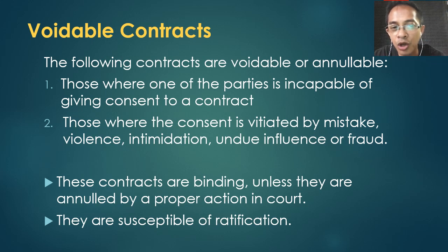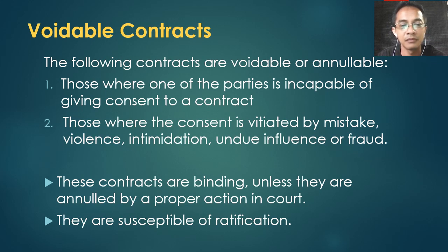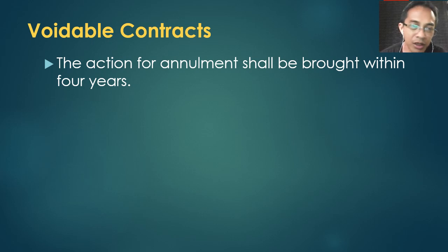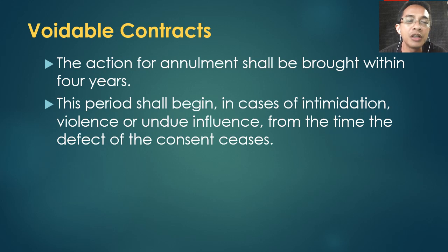Voidable contracts are susceptible to ratification. The minor can ratify when he grows up, the insane person when he recovers, and the person who was threatened can ratify once the threat is gone. The period for filing annulment is four years. For intimidation, violence, and undue influence — four years from the time the defect of consent ceases. For mistake or fraud — four years from the time of discovery.